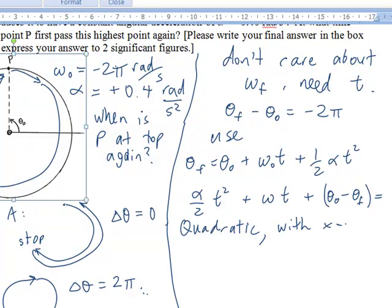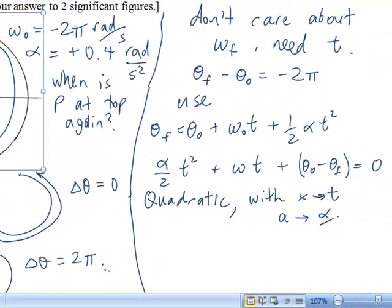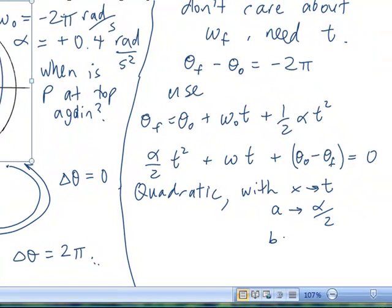It will be alpha over two times t squared plus omega t plus theta sub zero minus theta f. So, this is a quadratic equation. With t instead of x, we've got alpha over two instead of a, omega instead of b, and theta sub zero minus theta sub f instead of c.